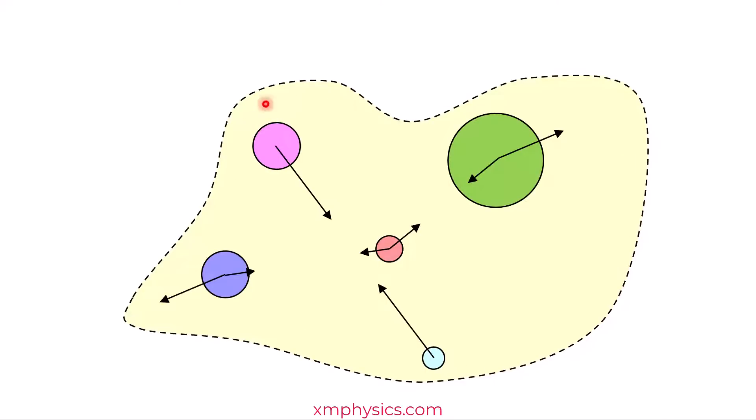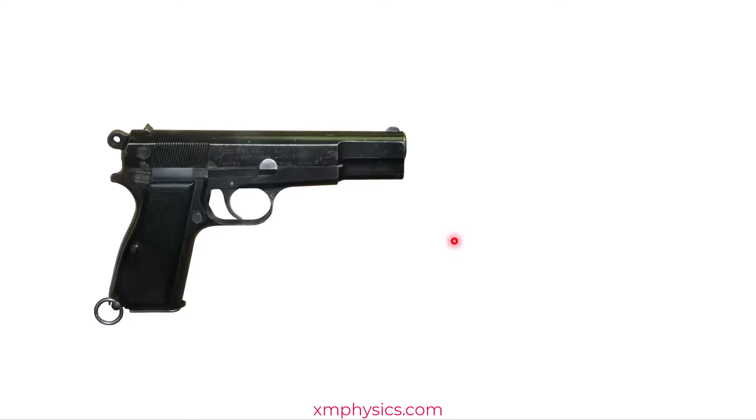The gun and bullet scenario is probably the most spectacular demonstration of PCOM. So before the gun fires the bullet, the total momentum of the gun and bullet system is zero, right? And then boom, when the bullet is fired, then the bullet has a rightward momentum and the gun has a leftward momentum.